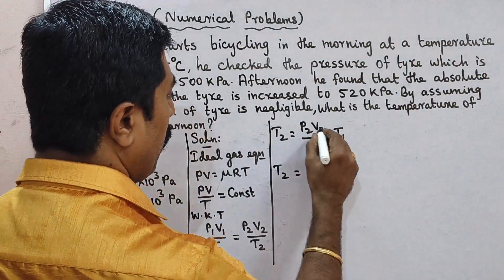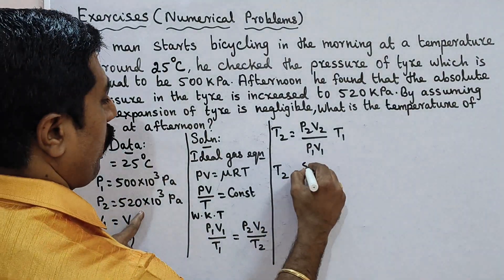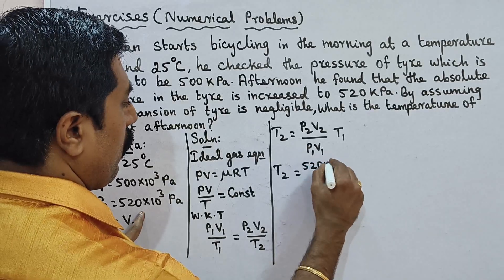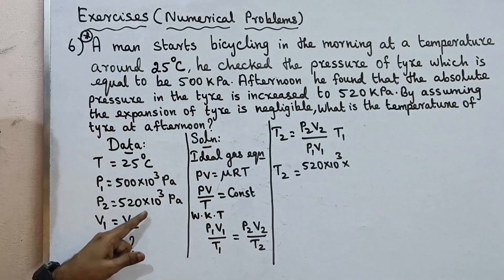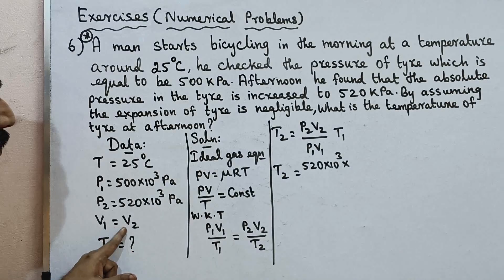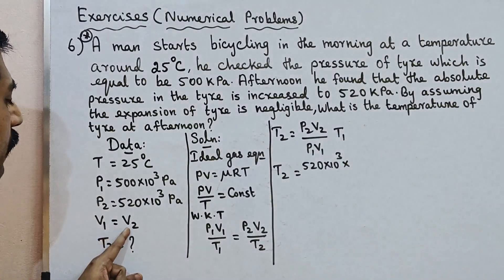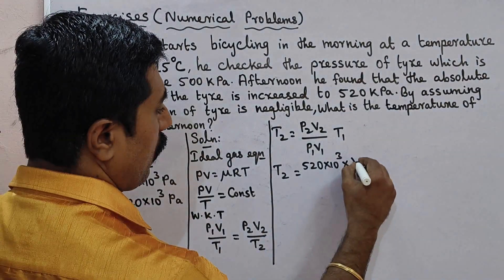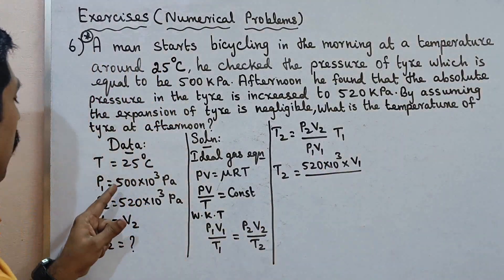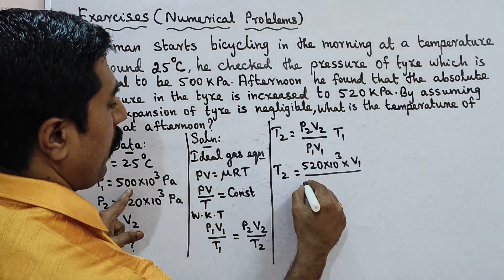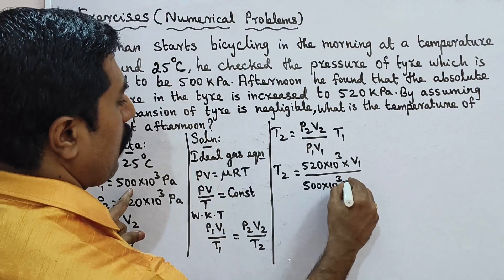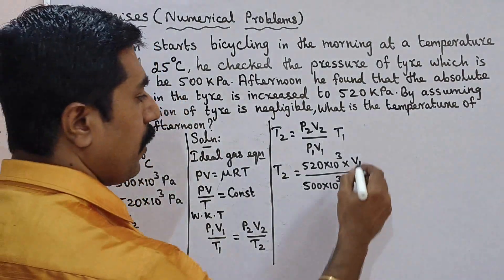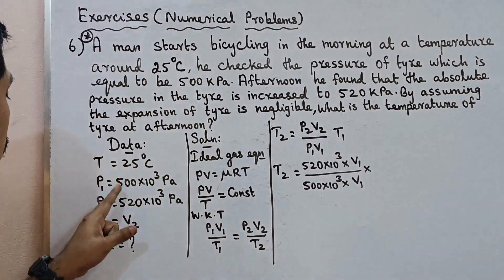Now substitute the values. P2 is 520 into 10 to the power 3, multiplied by V2, divided by P1 which is 500 into 10 to the power 3, multiplied by V1, then multiplied by T1. T1 value is substituted next.